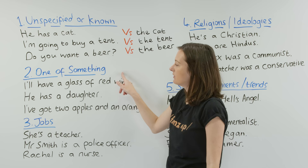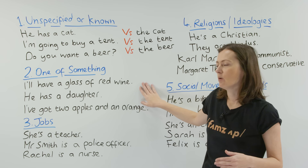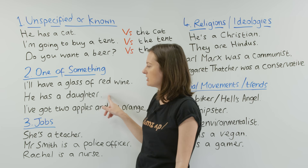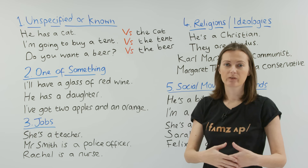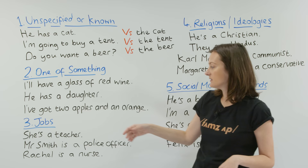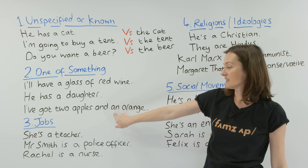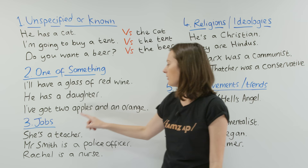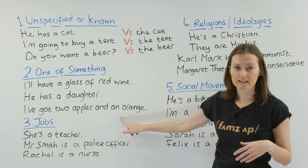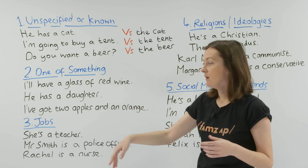The second use is 'one of something'. 'I'll have a glass of red wine' means one glass — you might say that when ordering at a bar. 'He has a daughter' means the same as 'he has one daughter'. And 'I've got two apples and an orange' — we have the number two for the apples, but we only mean one orange, so we say 'an orange'. If you're wondering why it's 'an' and not 'a', check out Jill's lesson on when to use 'a' or 'an'.